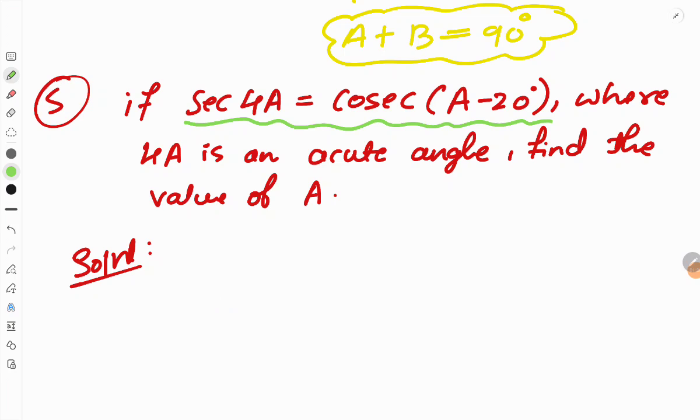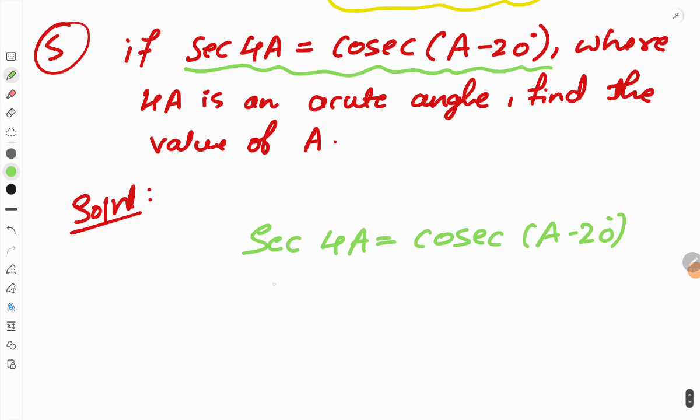Using the same complementary angle condition, sec 4A can be written as cosec of 90 minus 4A, which equals cosec of A minus 20 degrees. The problem is almost solved since both sides have the same function.